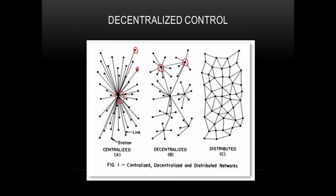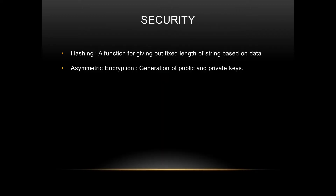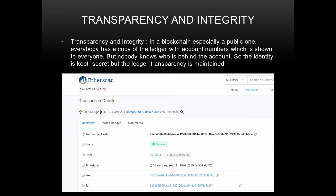Blockchain maintains its security through hashing and asymmetric encryption, both of which are discussed in a previous video. Regarding transparency and integrity, in a public blockchain everybody has a copy of the ledger with account numbers shown to everybody. The account number is basically your public key, which anyone can see, and the password for that account is the private key which only you can see.